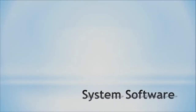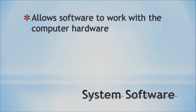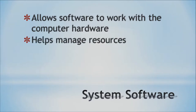First up, we're going to be talking about system software. This is what allows the software to work with the computer. Without this, computers would be pretty much useless. We need the system software to be able to work and communicate with the computer hardware. Part of the system resources also helps to manage the different resources that the computer has, and you will learn about these resources throughout this course.